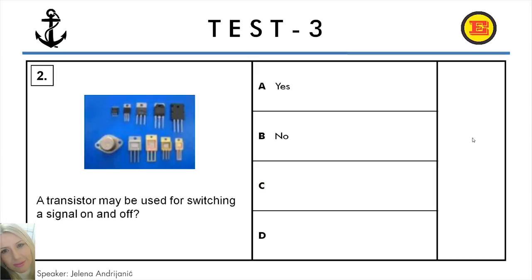Question number 2. A transistor may be used for switching a signal on and off? A: Yes, B: No. And the correct answer is A: Yes.